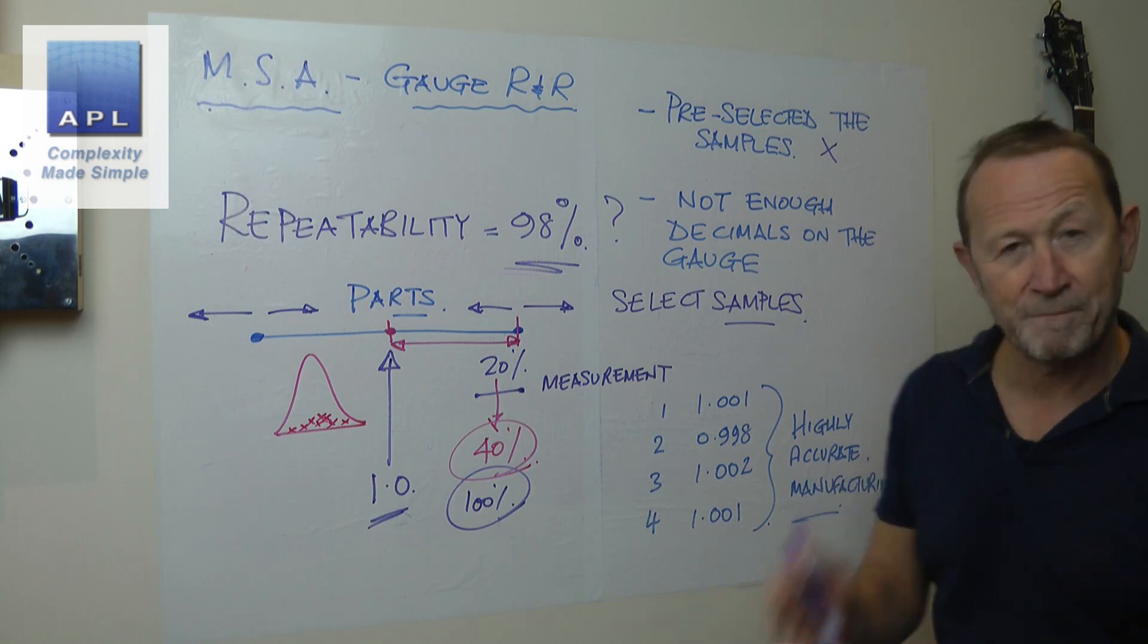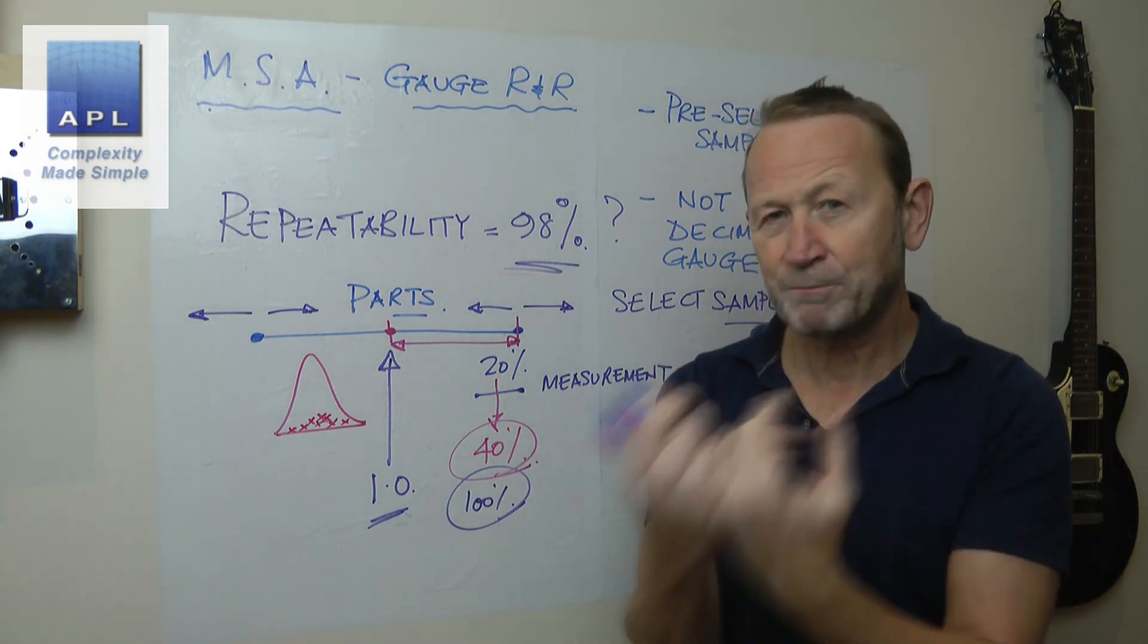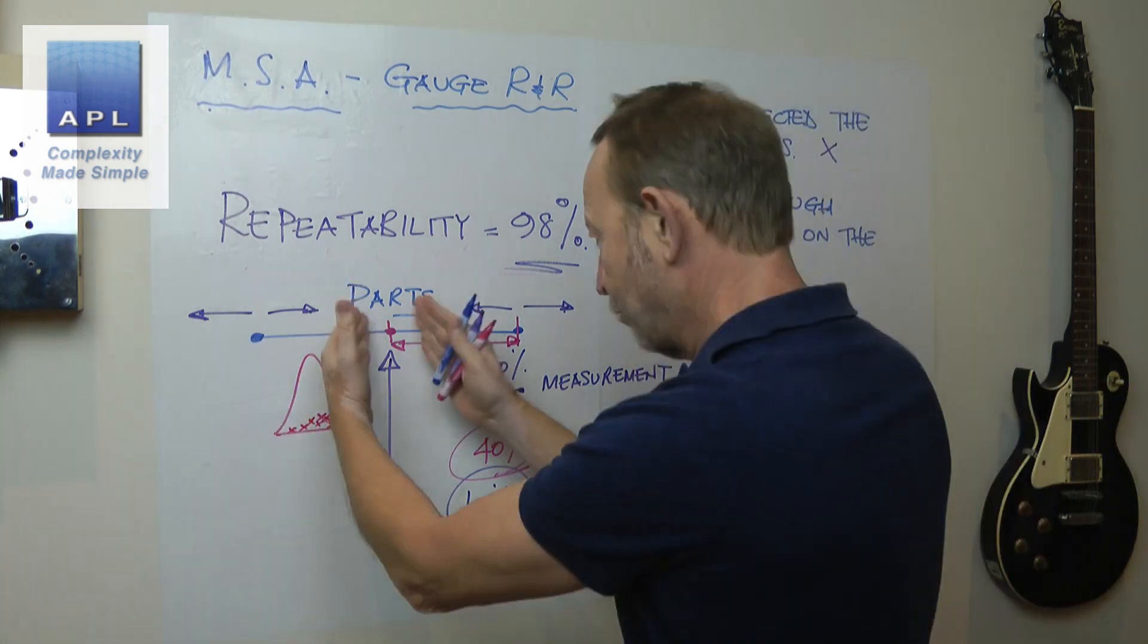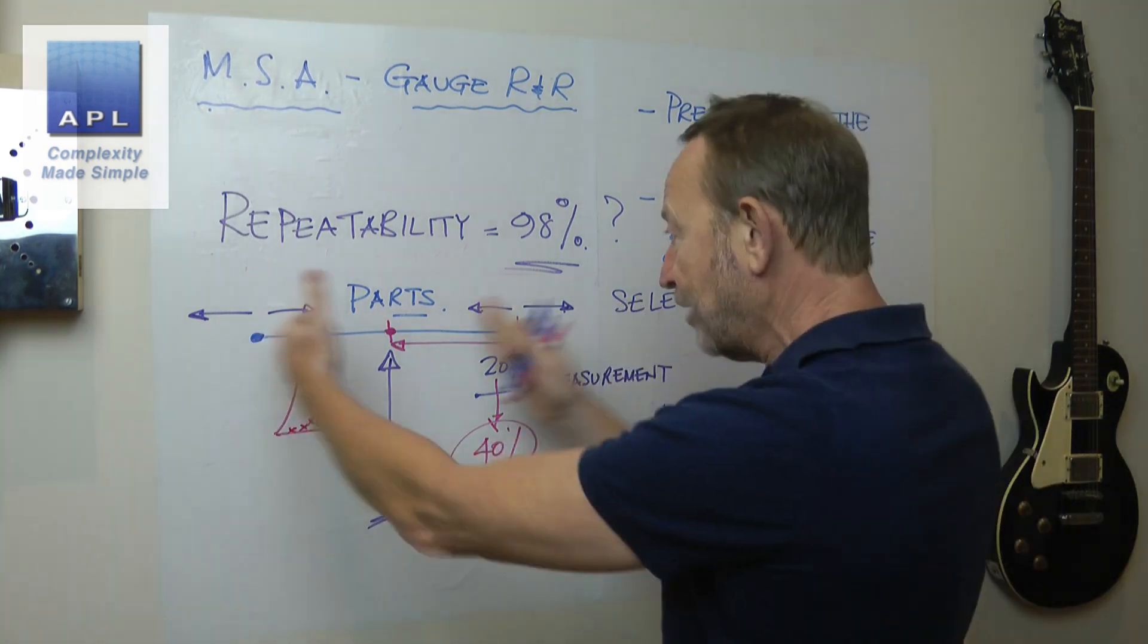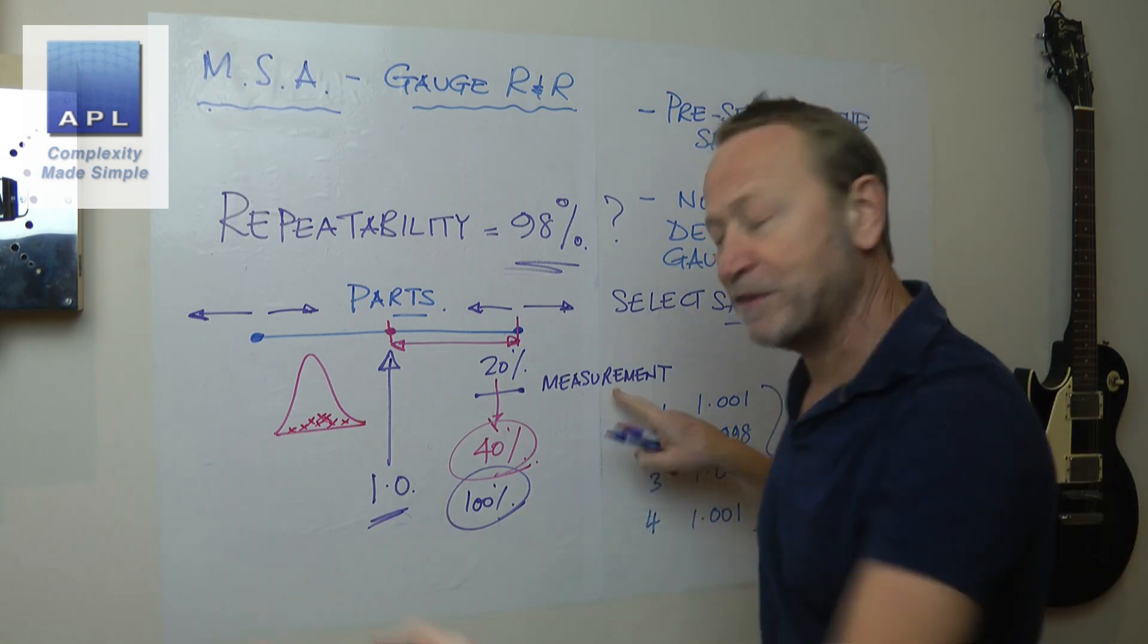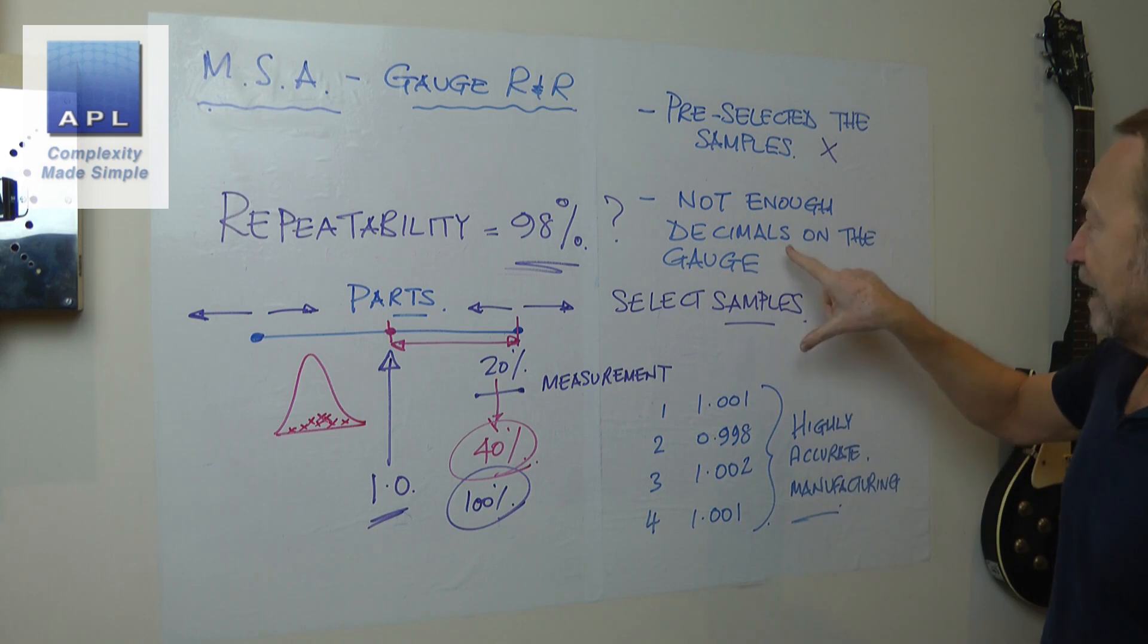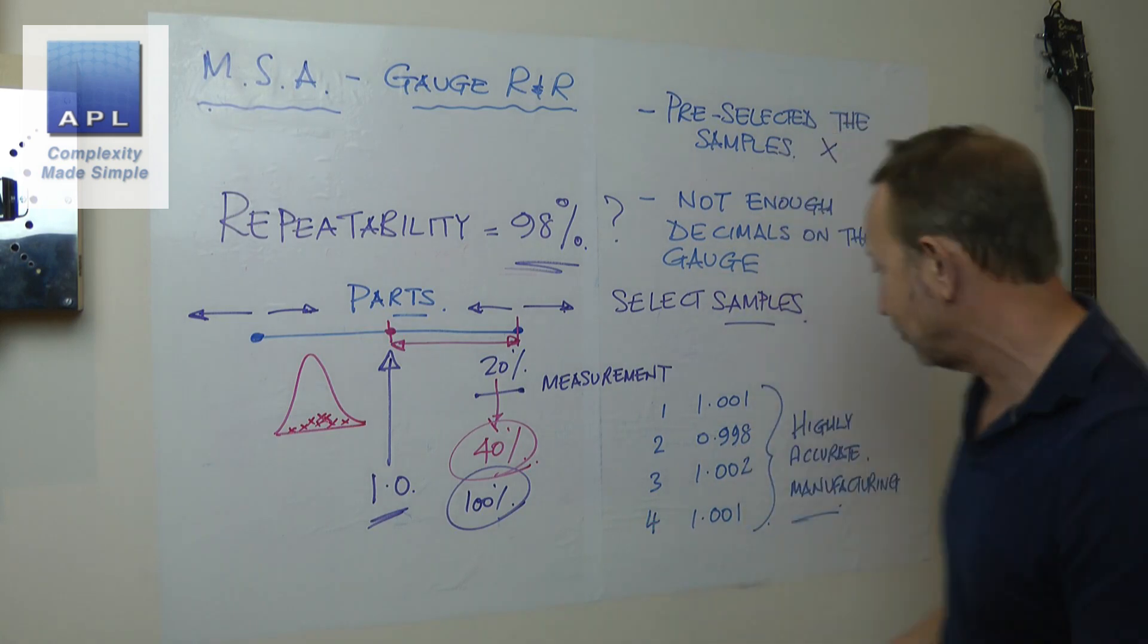They have tolerances, plus or minus two microns. They are measuring really, really tightly. They are manufacturing really tightly. So genuinely, they have very little variability in the parts. And therefore, all the variability shows up in the measurement system. So if that is the case, you have to make sure you have plenty of decimals levels on your measurement system. Now, I have to say, if you were measuring microns, you would actually want another decimal place.